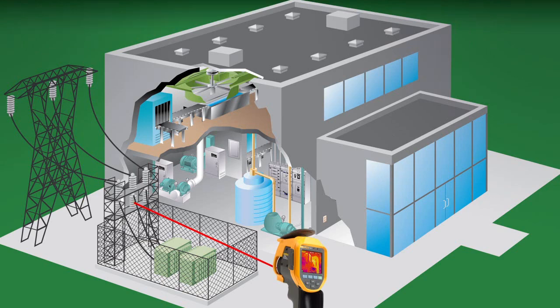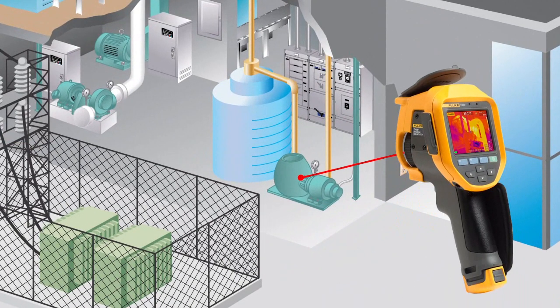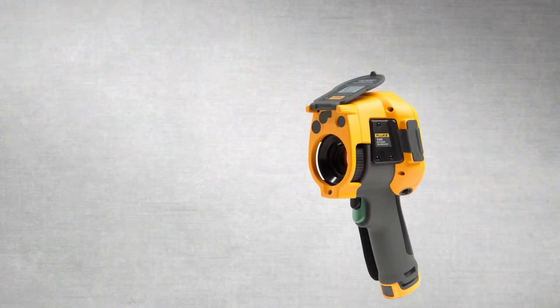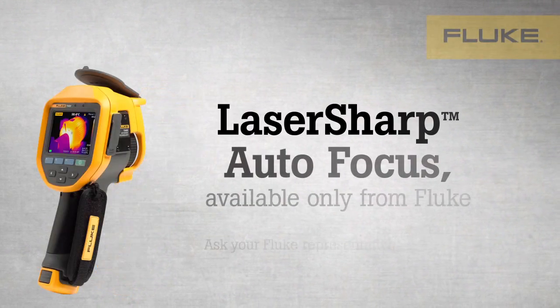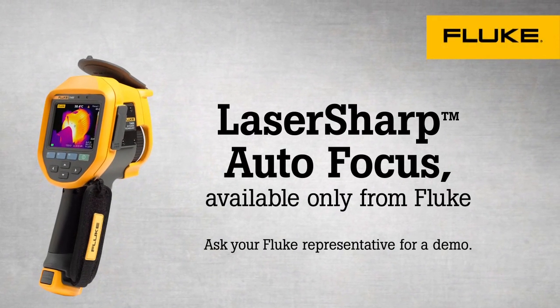You place the red laser dot on the object you are inspecting, then you pull the trigger for an in-focus infrared image every single time. Laser sharp autofocus gives you the confidence that you'll never take an out-of-focus infrared image again. Ask your local Fluke representative for a demo.